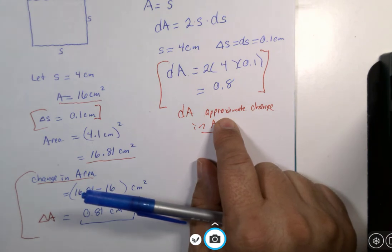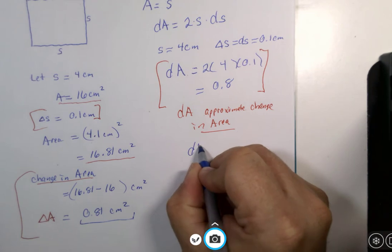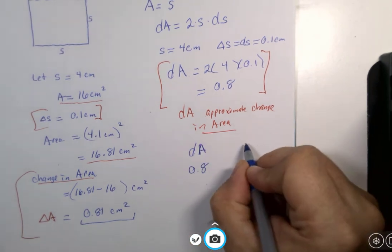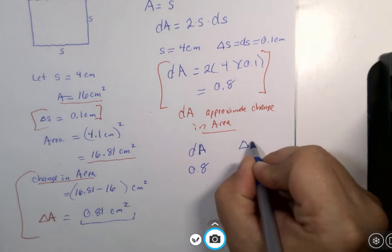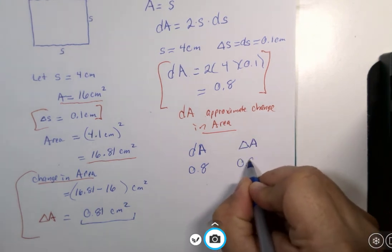And they dominate the real world of mathematics more than our algebra formulas will. But I want you to note that dA, which is 0.8, is not exactly equal to delta A, which is 0.81. But man, are they close to each other.